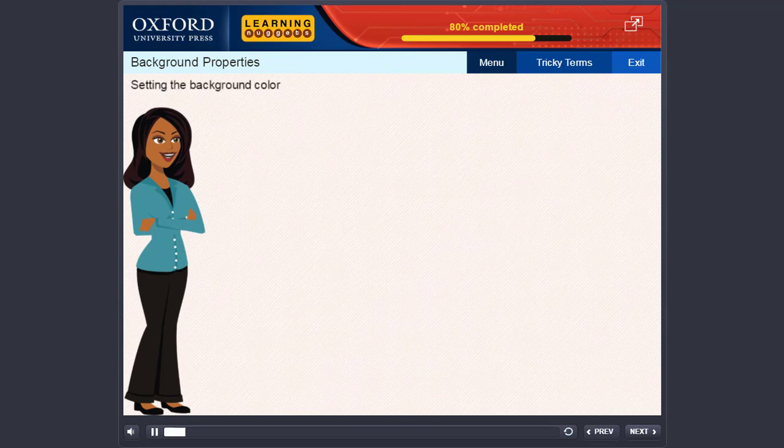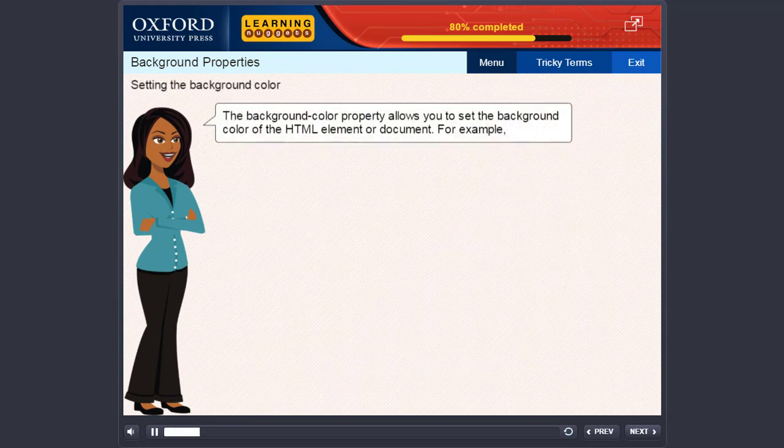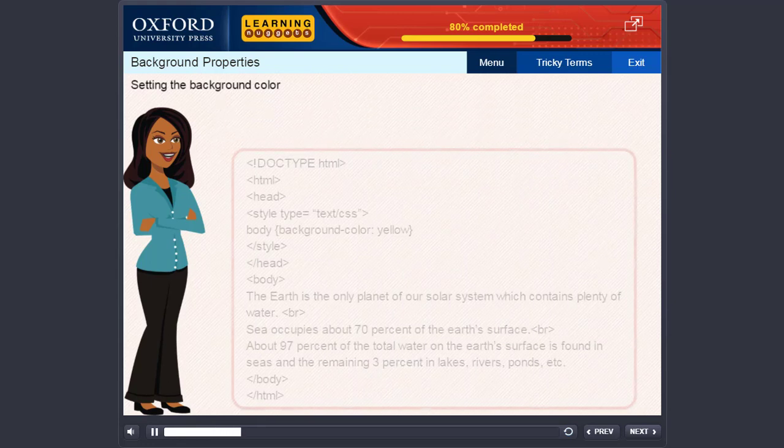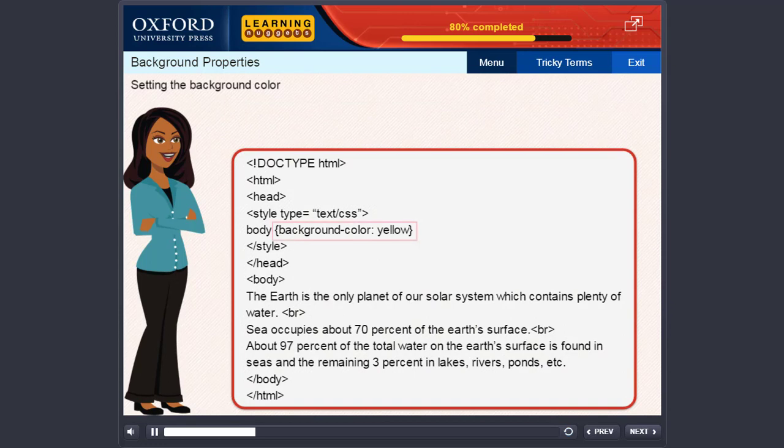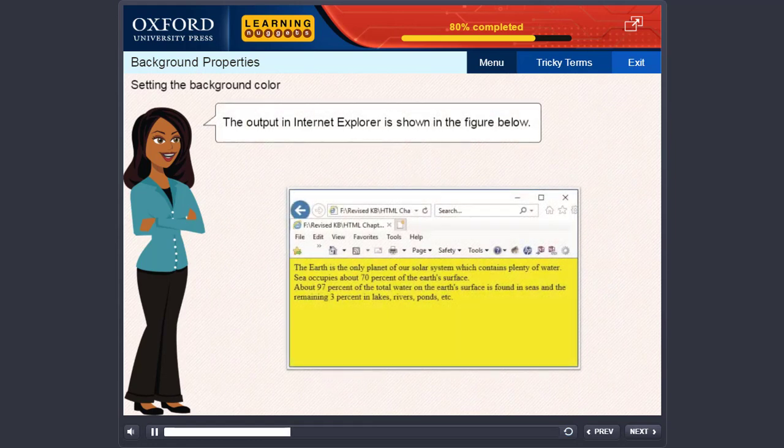Setting the background color. The background color property allows you to set the background color of the HTML element or document. For example, the background color yellow has been set for the body element here. The output in Internet Explorer is shown in the figure below.